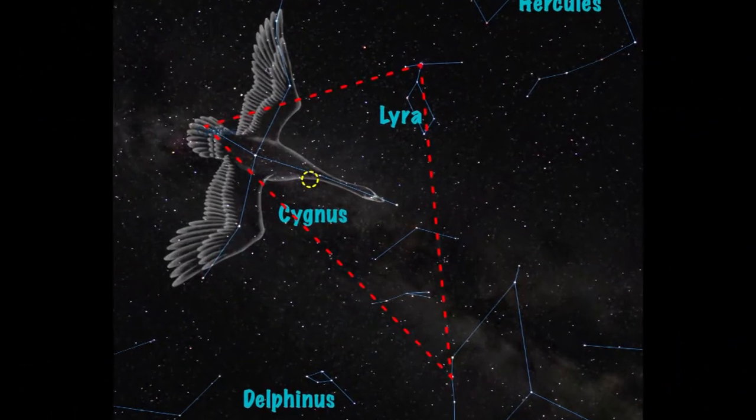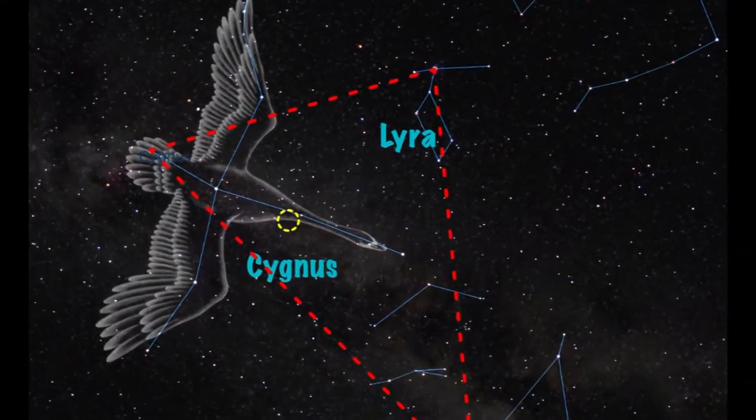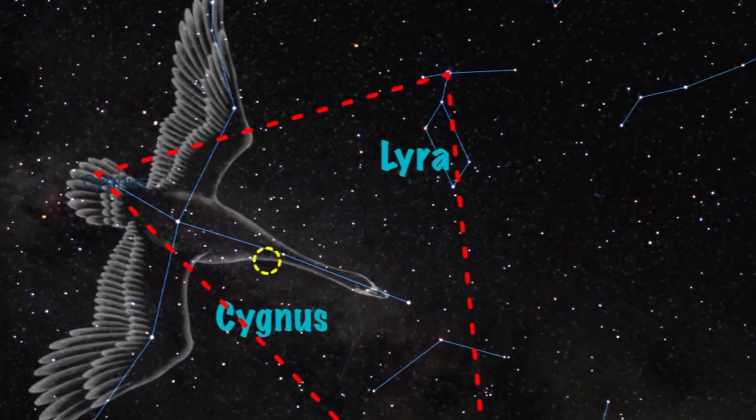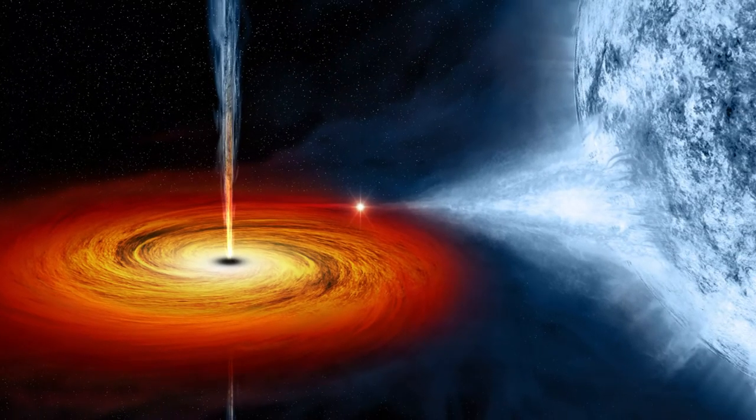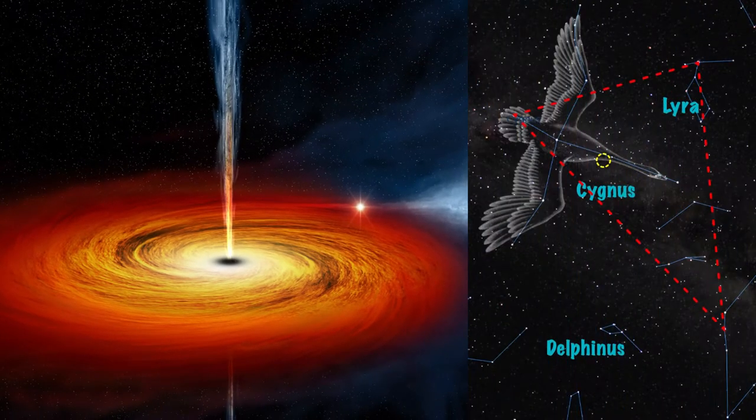The first observational evidence for the existence of black holes came in around 1970 when astronomers reported a massive invisible object in orbit around a blue star in the constellation of Cygnus.